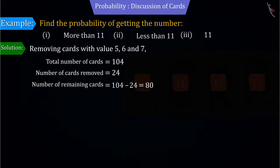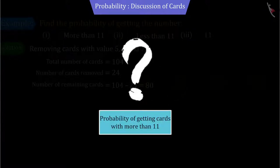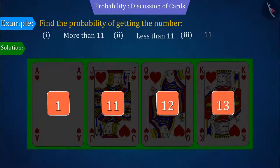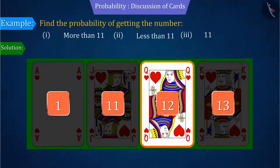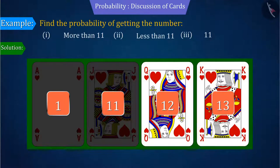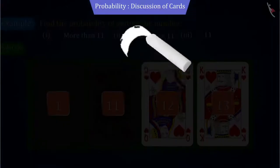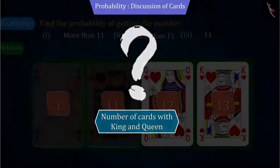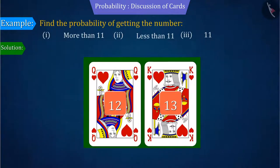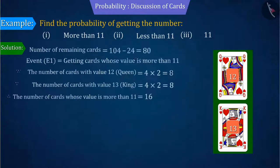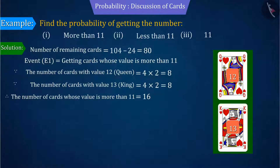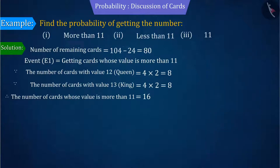So let's first discuss the event of getting cards with a value more than 11. According to the question, cards whose value is more than 11 are only Queen and King, whose values are 12 and 13 respectively. So can you tell me how many Queens and Kings are there among these cards? Right answer! From the remaining cards left, we can tell that we have a total of 16 cards of Queen and King.